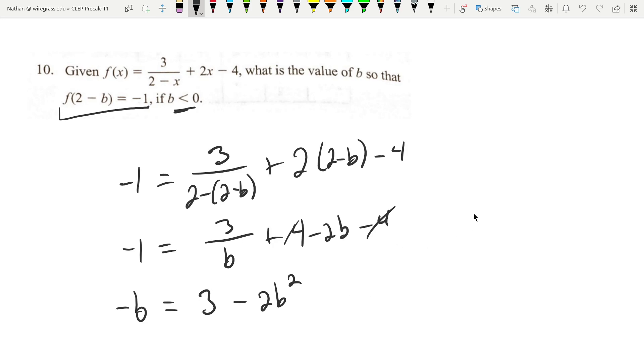This is a quadratic, so let's get it all over to one side and simplify. We're going to get 2b squared minus b minus 3 equals 0.